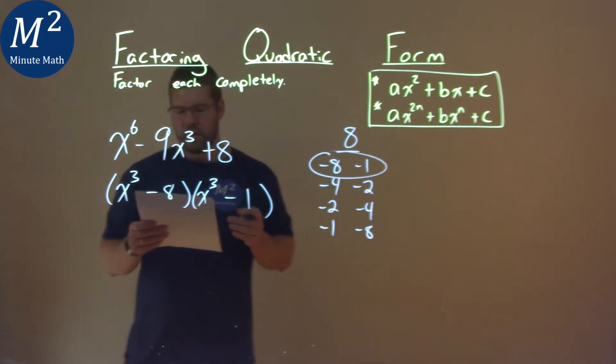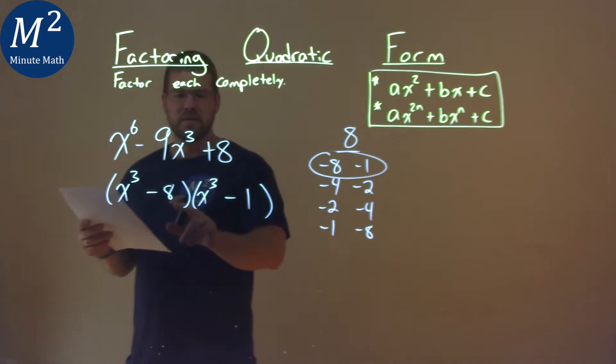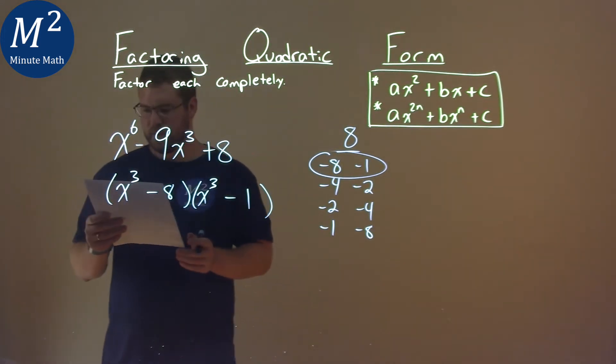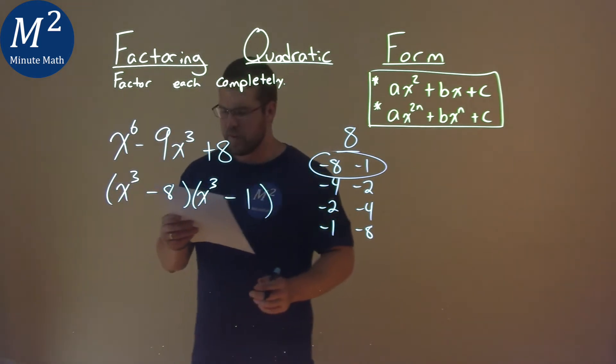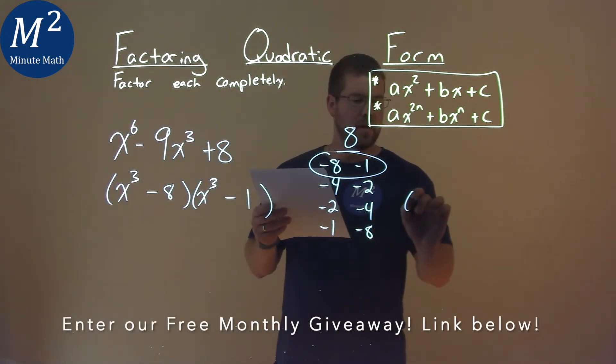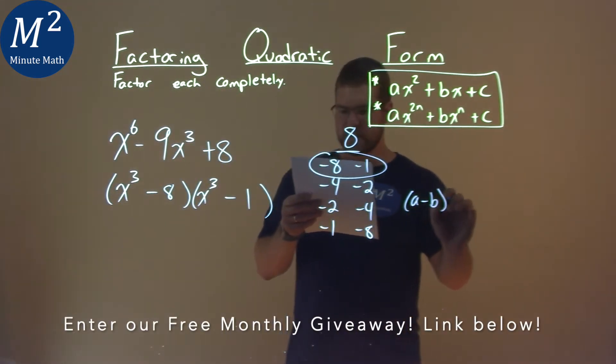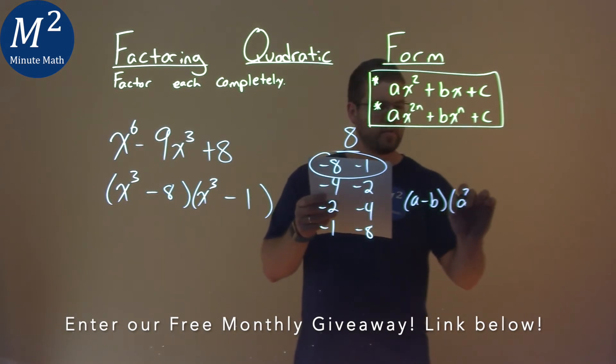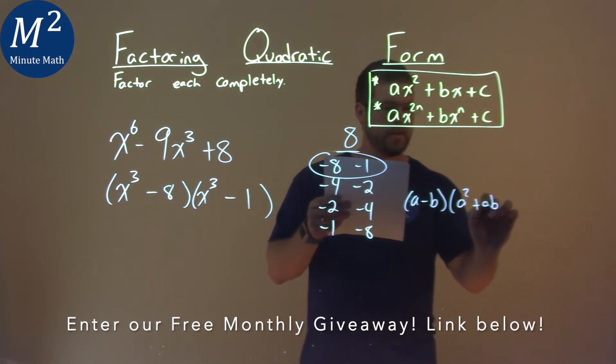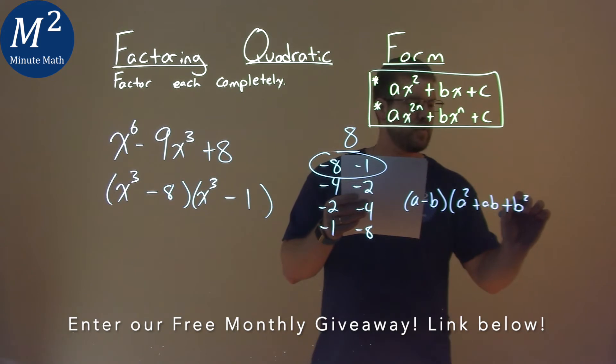We're not done yet. We see we have actually two cubes here. And we're going to use the difference of cubes formula. If you don't remember what that is, it is an a minus b times an a squared plus ab plus b squared.